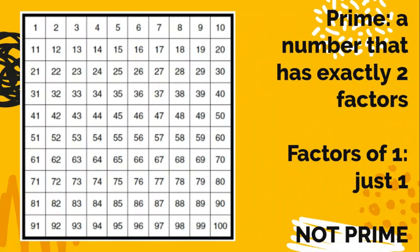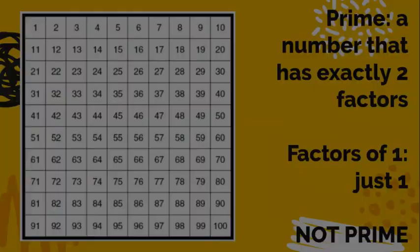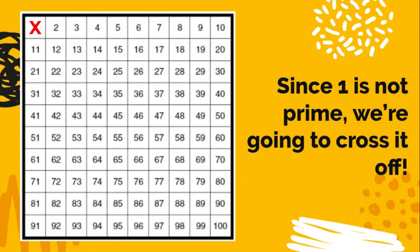So let's look at the number 1. Remembering that a prime number is a number that has exactly two factors. There's only one fact that equals 1. It's 1 times 1. So that means 1 only has one factor. So it is not prime. It's actually not composite either, but it's not prime, and that's what we care about today. So you're going to pick a color. I chose red, and you're going to cross off the number 1 because it is not prime.